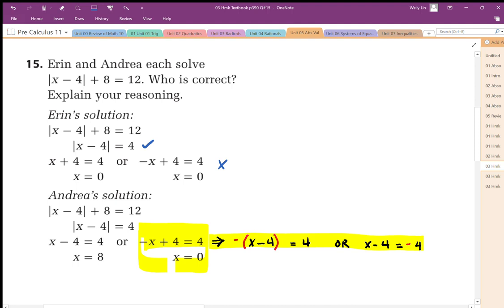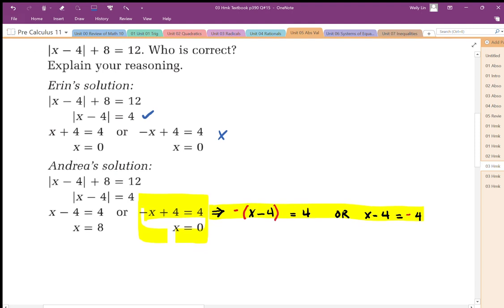So Andrea's solution is correct. So it looks like she did the same thing, she subtracted 8 from both sides, but when she did the absolute value, she used the positive inside, so x minus 4 stays the same, and she did the opposite for the inside.